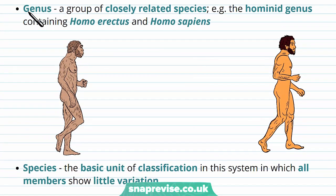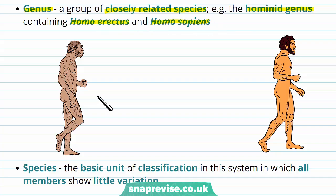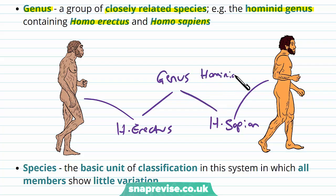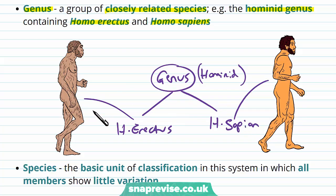Penultimate, we have genus. So closely related species — for example, the hominid genus contains Homo erectus and Homo sapiens. These are two types of early human. Both come under the same genus of hominid, but they are two different species. Genuses connect species that are very similar under the same umbrella.